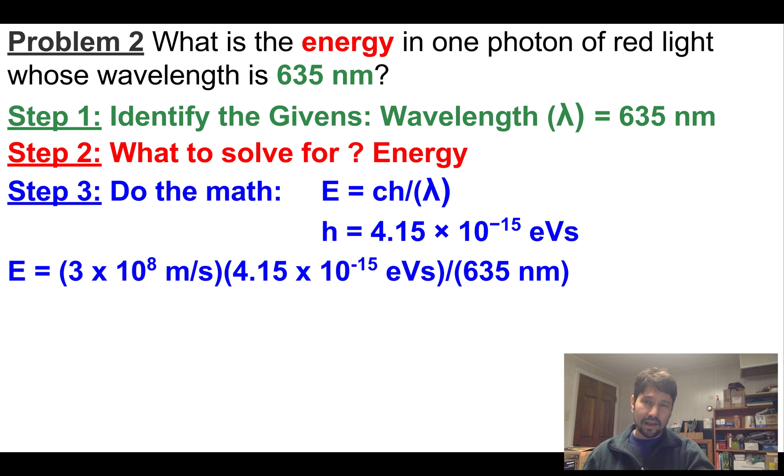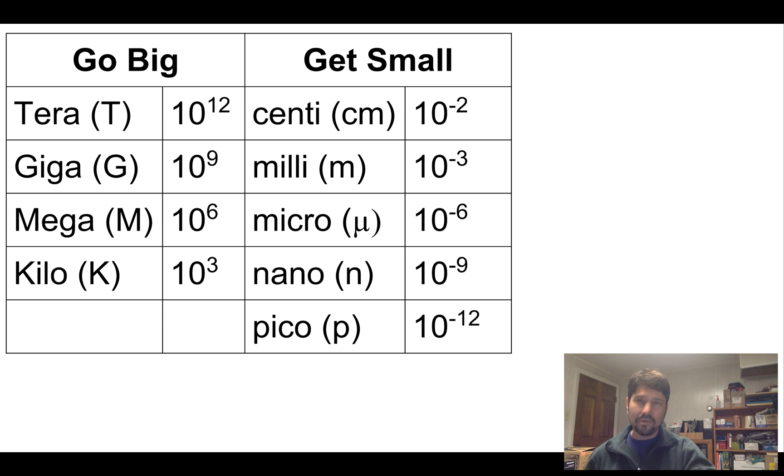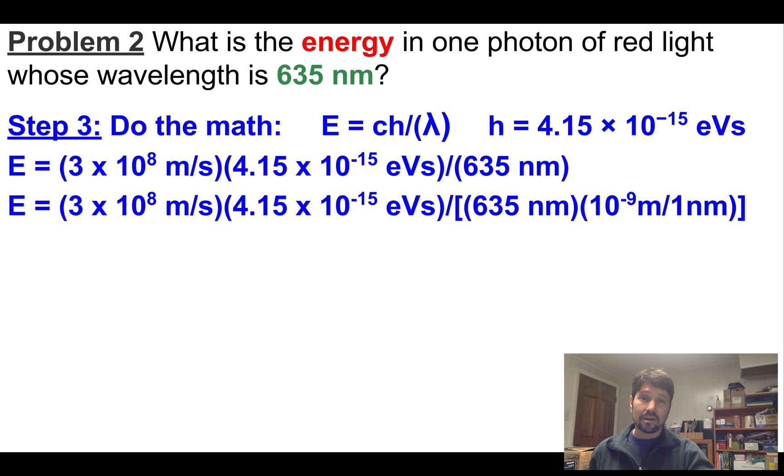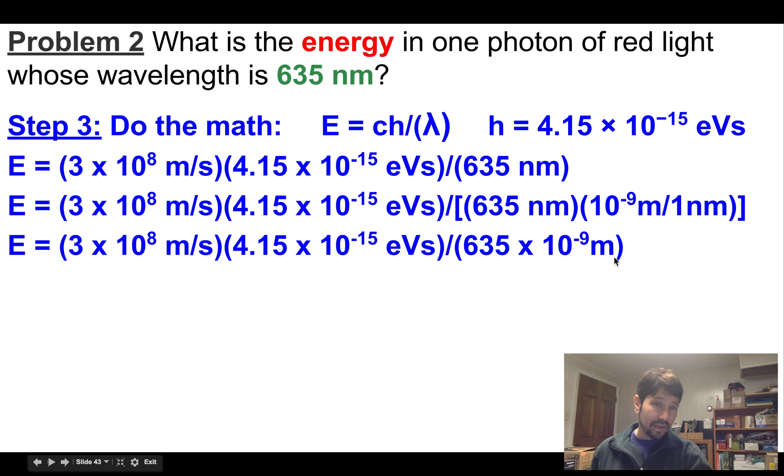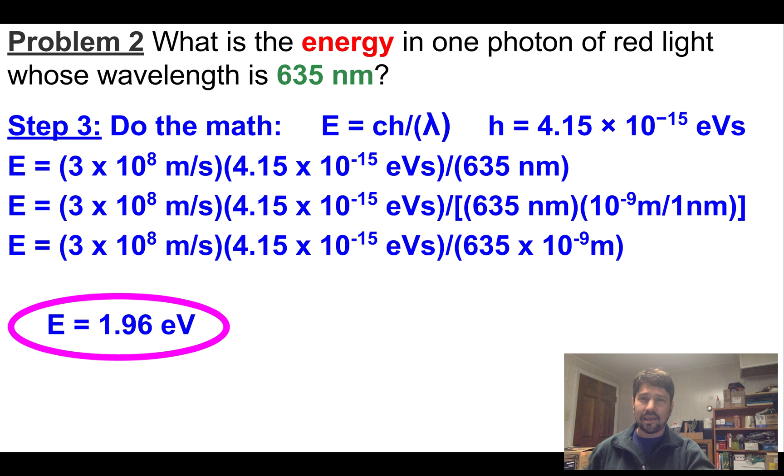Energy equals the speed of light, 3 times 10 to the 8th meters per second, times Planck's constant, 4.15 times 10 to the negative 15th electron volt seconds, divided by 635 nanometers. Uh-oh, I got meters up top and nanometers down below. Good thing I've got all my numeric prefixes memorized. Nanometers mean it's 10 to the negative 9th meters. So I got this conversion factor, 10 to the negative 9th meters in one nanometer, so that my nanometers will drop out and I won't have a units problem. And that comes out to be 1.96 electron volts. Better circle it, make it obvious.